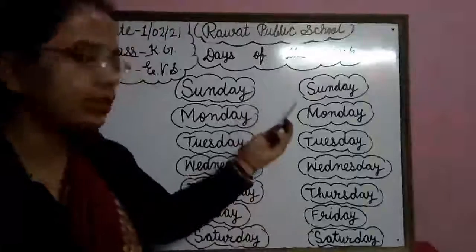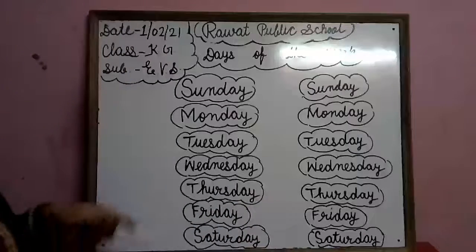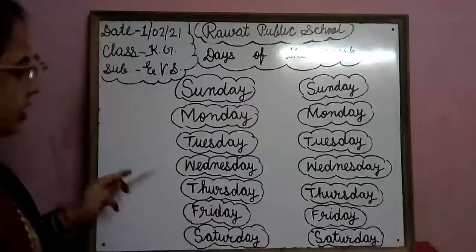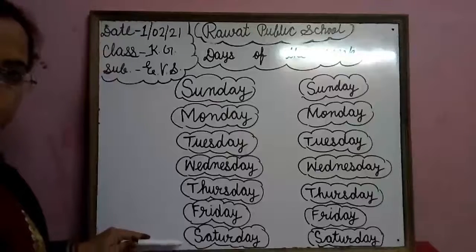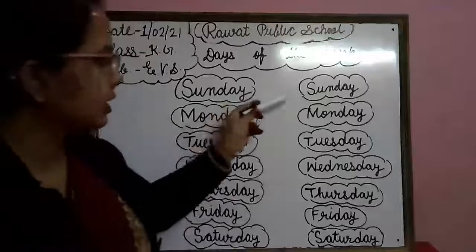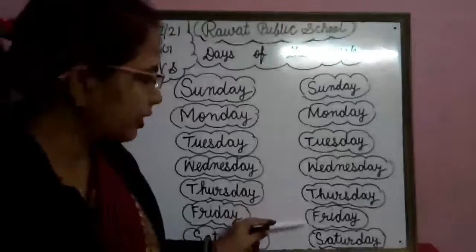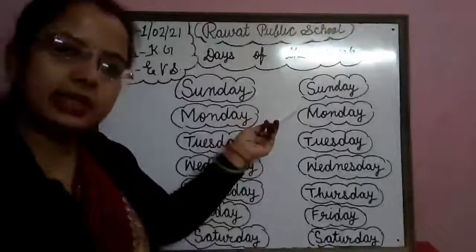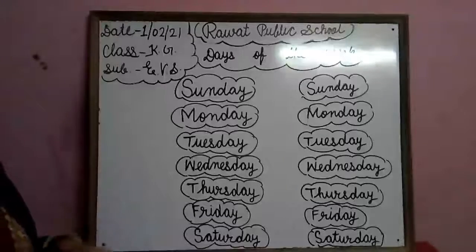Saturday. Once again — Sunday. Sunday is a holiday. Sunday is a holiday. Okay. Sunday, Monday, Tuesday. Jaldi se aa — Wednesday. Thursday, Friday, Saturday. Thursday, Friday, Saturday. Once again — Sunday. Sunday is a holiday. So check them — please learn days of the week.